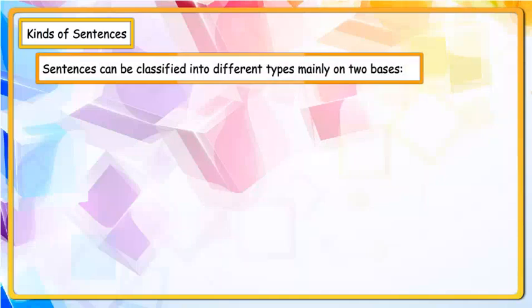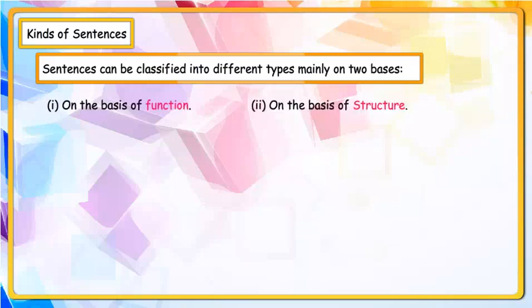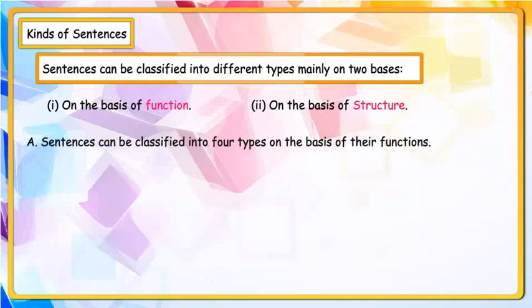Sentences can be classified into different types, mainly on two bases: on the basis of function, and on the basis of structure. Sentences can be classified into four types on the basis of their functions.